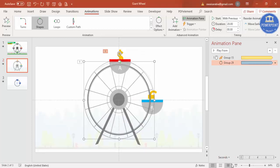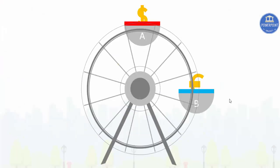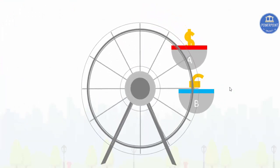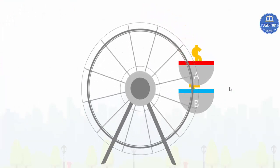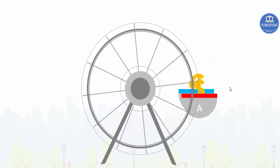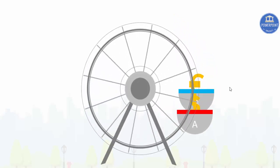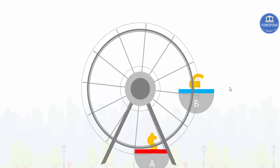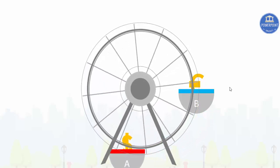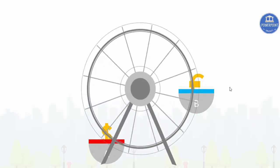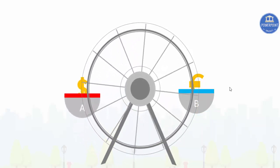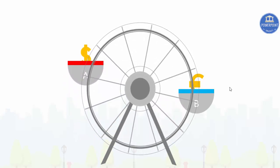Let's preview the slideshow. When I click, you can see Cabin A has started moving around the wheel perfectly. It completes full rotations and will not stop until you end the slideshow.